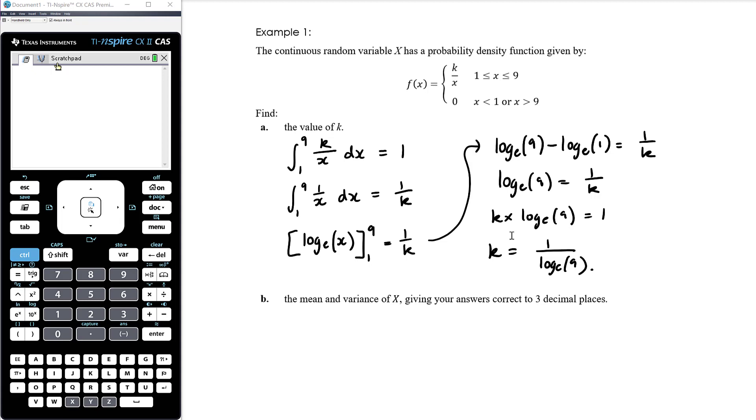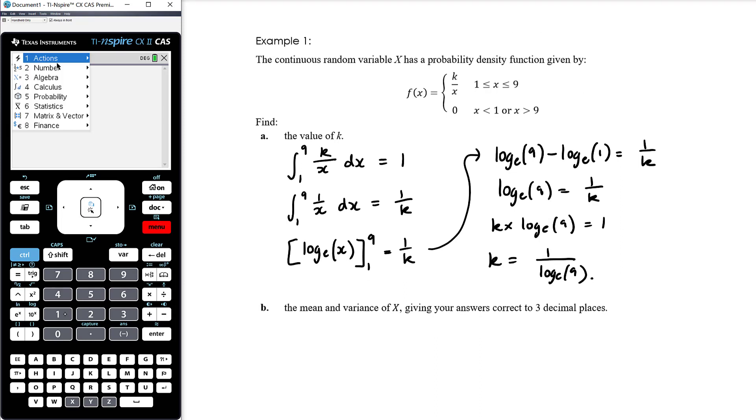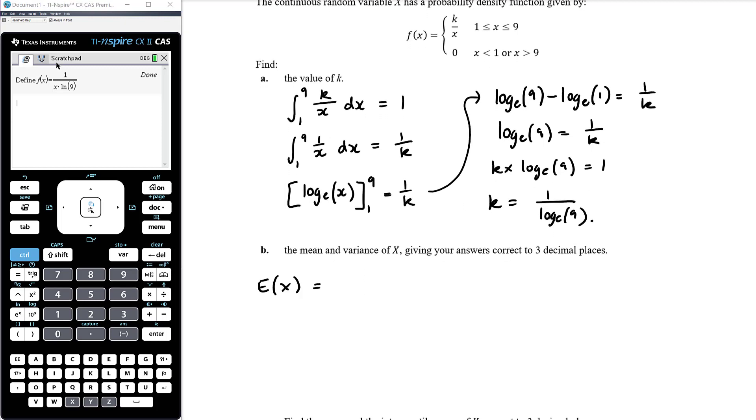We want to find the mean and the variance of x, giving your answers correct to three decimal places. OK, so three decimal places, we've got our CAS. So let's define our probability density function. So menu one one, let's call it f of x. So it matches what it's called on paper. And it's just going to be one over x times log e of nine. And we know that's over the domain one to nine inclusive. So the mean would be the expected value of x. We know that is going to be the integral from one to nine of x times f of x. And so our CAS can work that out for us. Integral from one to nine of x times f of x dx is four on log e of three, which to three decimal places, control enter is three point six four one.